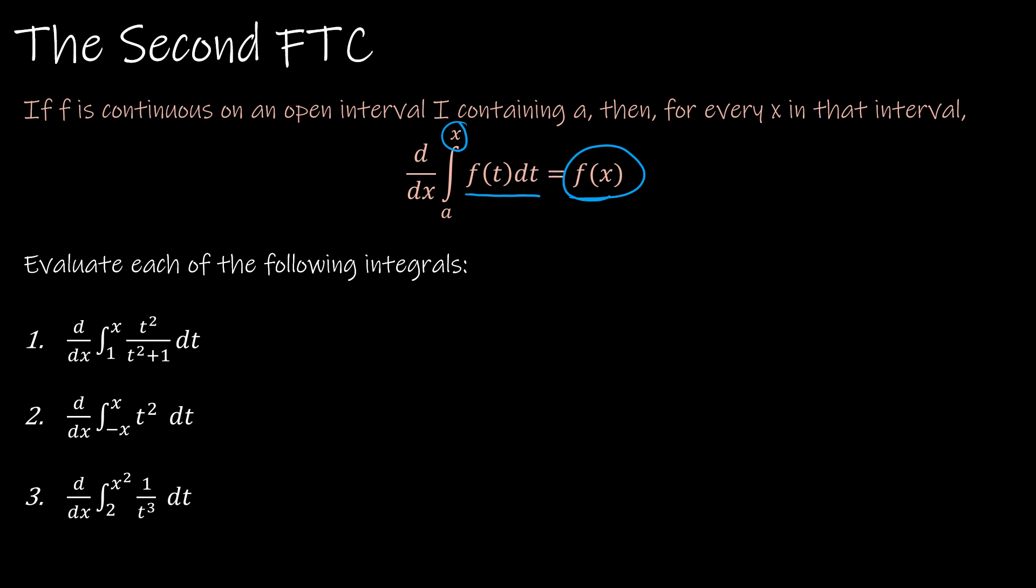So looking at question number one down here, because it's just X, I don't have to do any work. I don't have to integrate this and then find the derivative. I can say, well, the derivative of the integral is me replacing T with X. So X squared over X squared plus 1. Easy peasy.